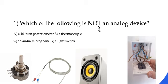Okay, so the very first one is which of the following is not an analog device? You are given four choices, so you have to decide whether each one of them is an analog device or not.